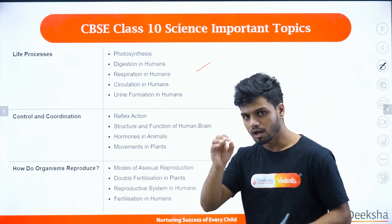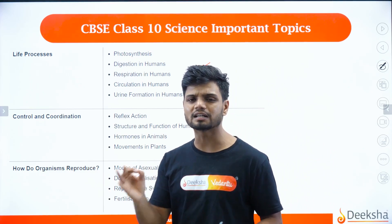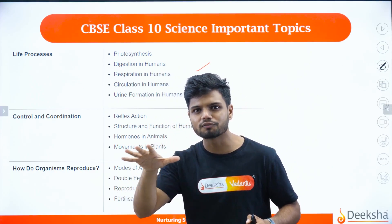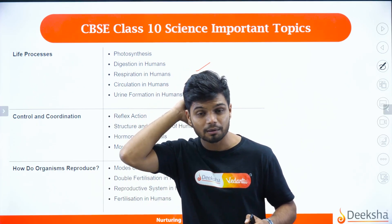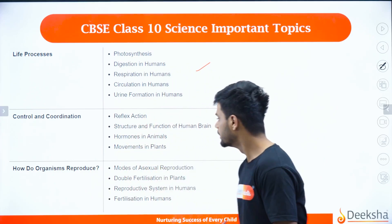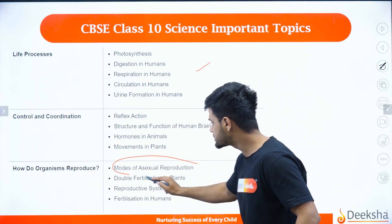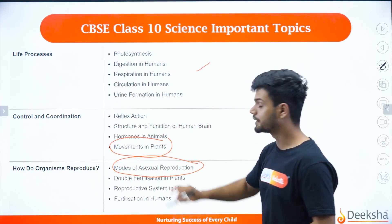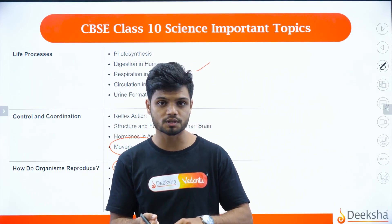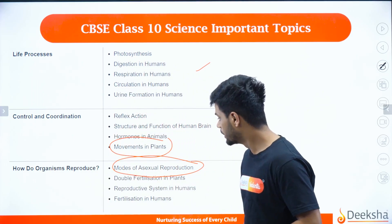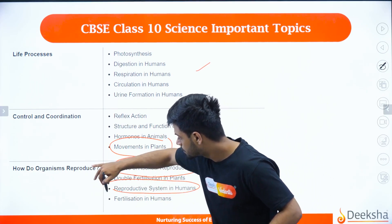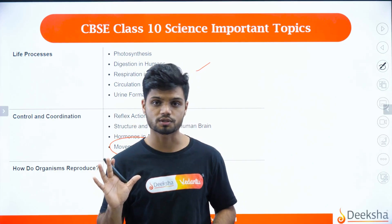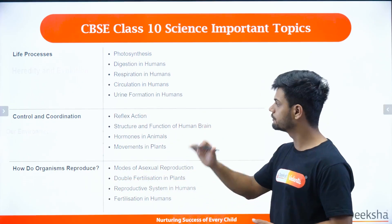In control and coordination, I want all of you to focus on the hormones — one question will directly come from the hormones, asking either about the gland or the excretion. Apart from hormones, they will ask you about reflex arc and the human brain — that is midbrain, hindbrain, and frontal brain — their functions as direct questions. In how do organisms reproduce, the modes of asexual reproduction and all the types are very important. Also, movement of plants — that is tropic movements: phototropism, geotropism, hydrotropism, chemotropism — very important. The reproductive system in humans, male or female, direct diagram-based questions, and fertilization in humans — sex determination — you have to study there.